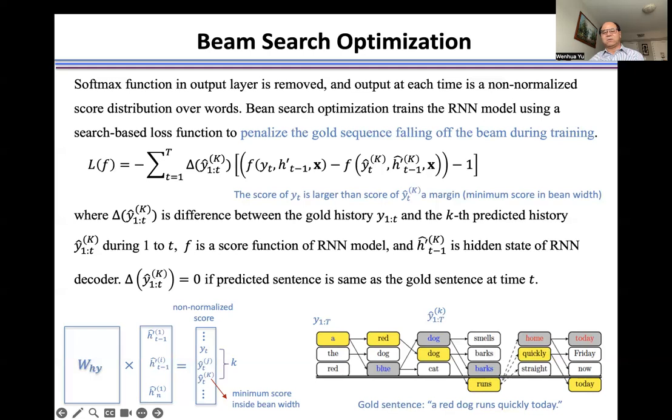For example, we have a ground truth sentence here at time t. A word was originally outside the beam width. By using this loss function to train the model, we can put this ground truth word inside the beam width to generate the correct or better fit sentence closer to the ground truth sentence.